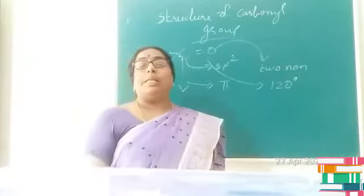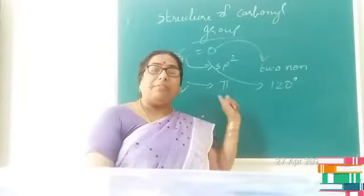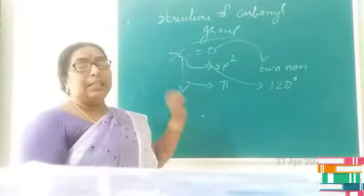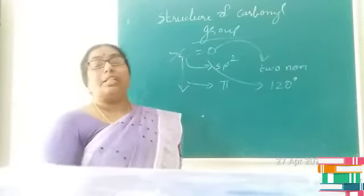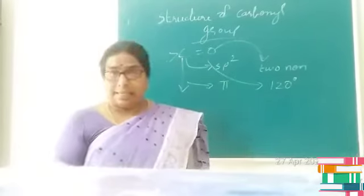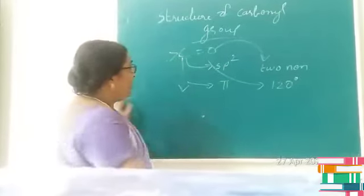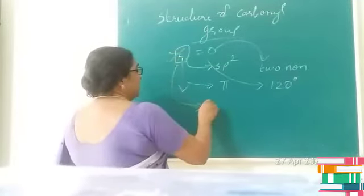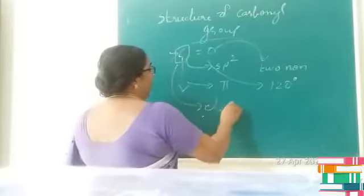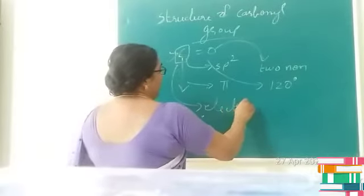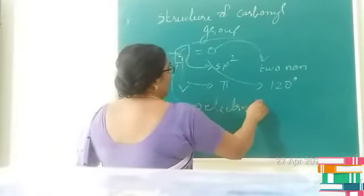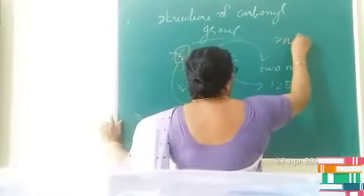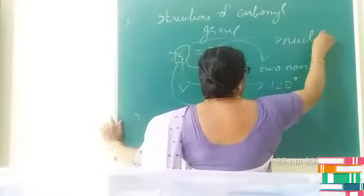Due to the large electronegativity difference between carbon and oxygen, the C=O bond is polar in nature. So the carbonyl carbon acts as an electrophile, while the carbonyl oxygen acts as a nucleophile.